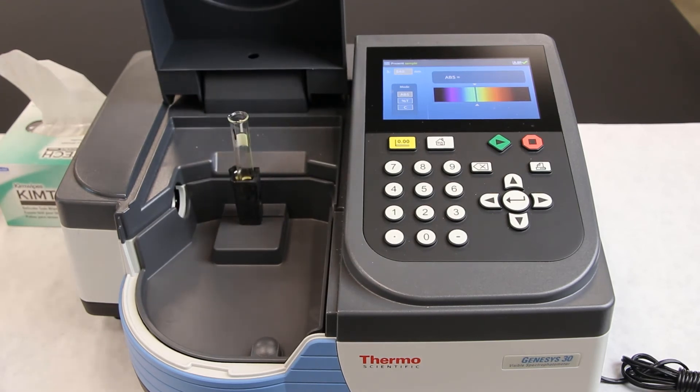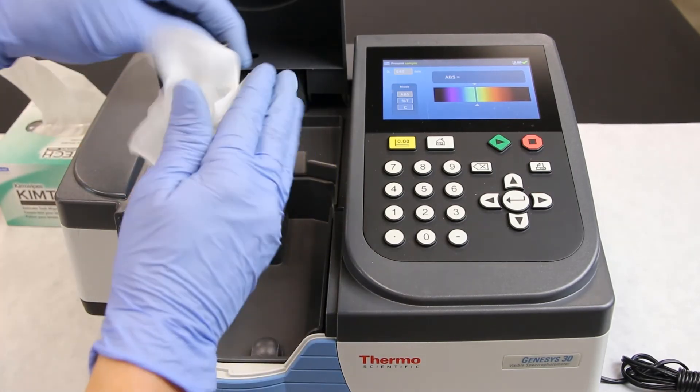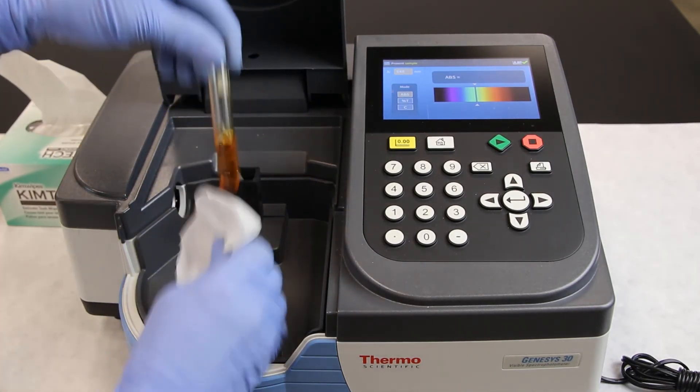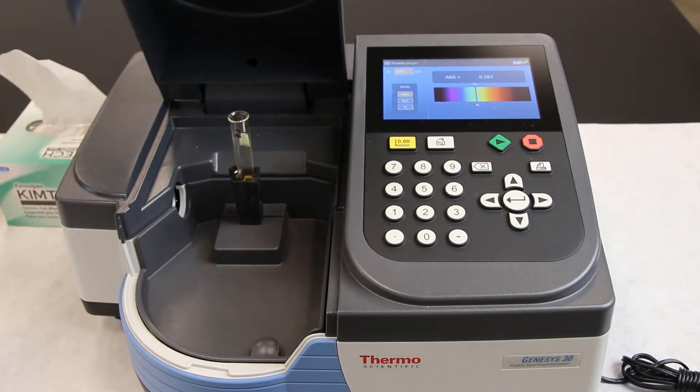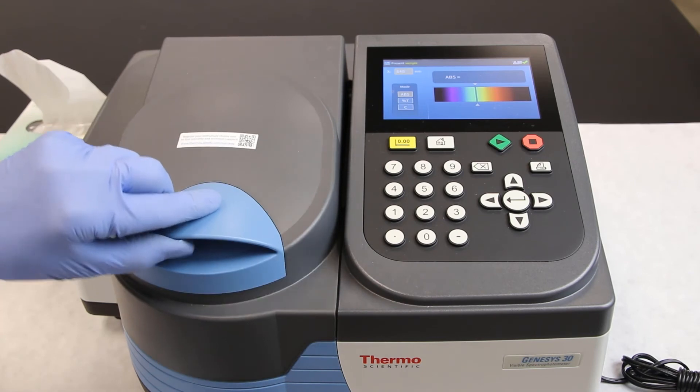Now it's time to read cuvette number 2. Wipe down the tube, place in cuvette chamber, and close the cover. Read the number on the display. Record the absorbance. Repeat this with each temperature sample.